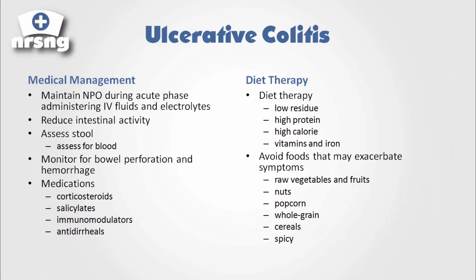During the acute phases — these exacerbations — we want to maintain the patient NPO and administer IV fluids and electrolytes. We'll take labs on these patients to figure out where their electrolytes are and administer electrolyte replacement as needed. We want to reduce intestinal activity, so maintaining NPO and bowel rest helps prevent malabsorption and multiple stools. We also want to assess the stools for blood and monitor for bowel perforation and hemorrhage.